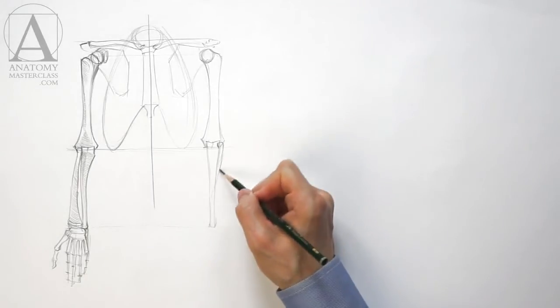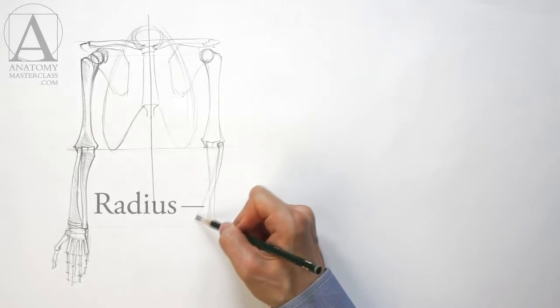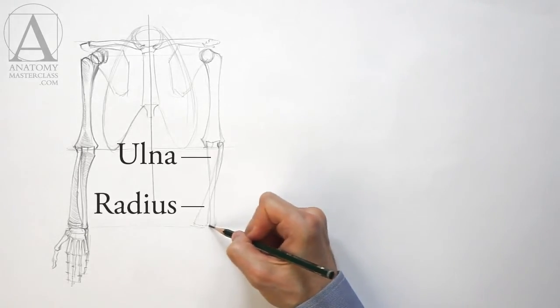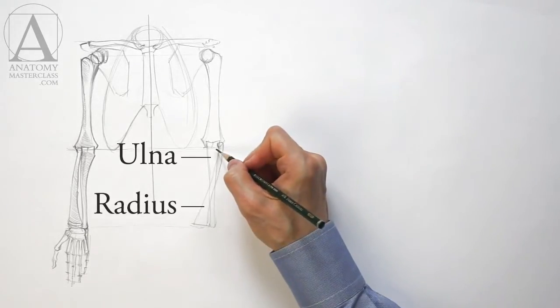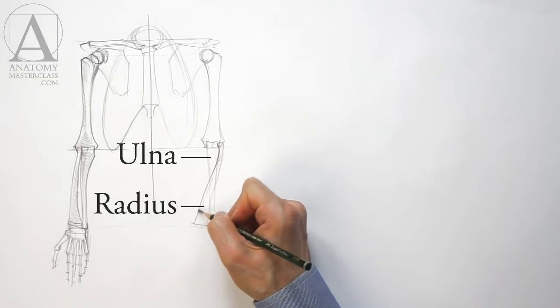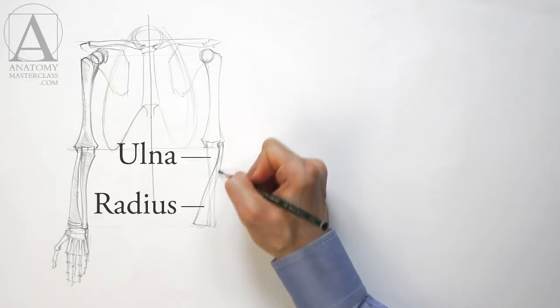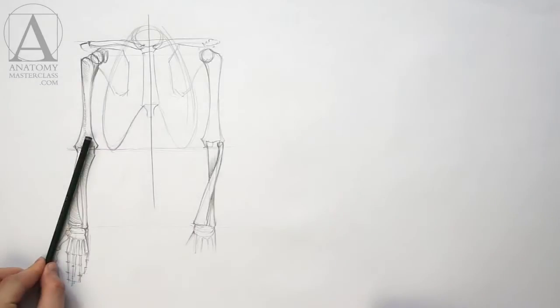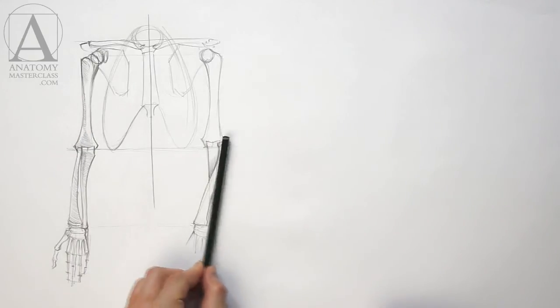I will quickly sketch another arm. This time, the radius will be rotated around the ulna, forming the pronation position. As seen on the drawing, the radius now overlaps the ulna. You may notice that the ulna does not rotate. The radius travels around the bone.